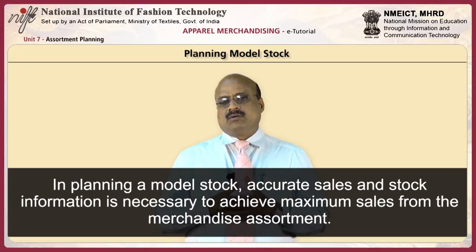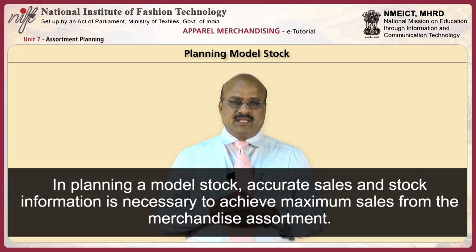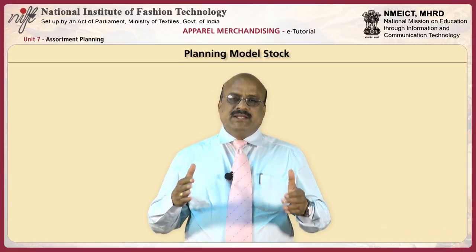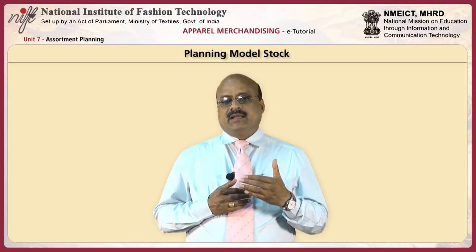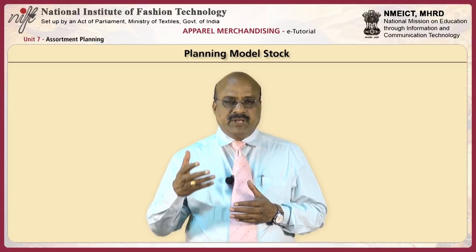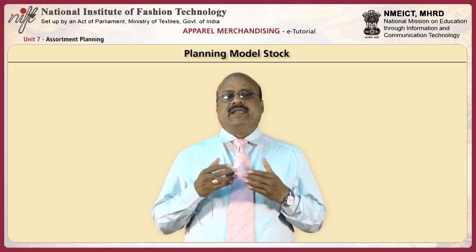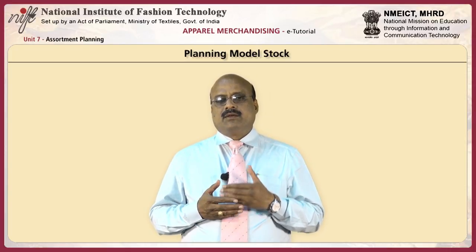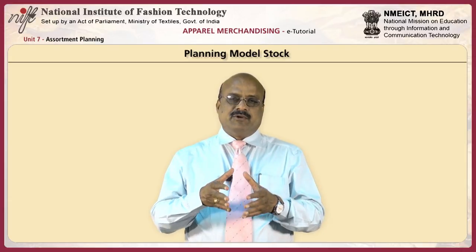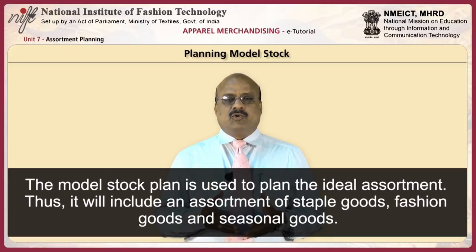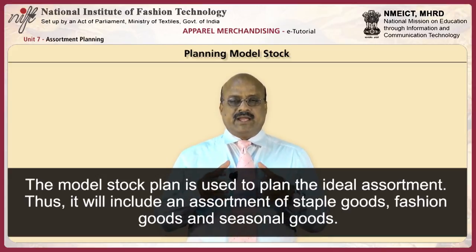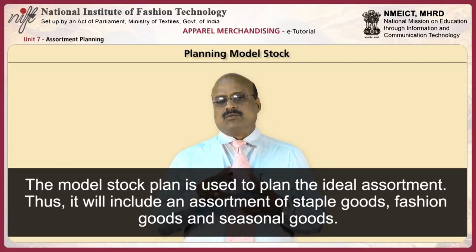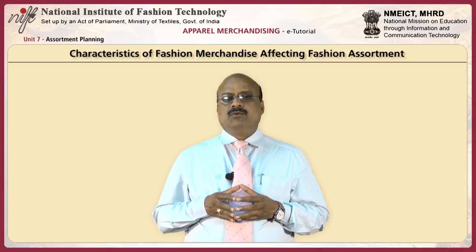In planning a model stock, accurate sales and stock information is necessary to achieve maximum sales from the merchandise assortment. The buyers of fashion apparel must be guided by current trends as well as by previous sales patterns. The buying specialist will develop a specific buying plan that gives consideration to what to buy, when to purchase, and when to have merchandise delivered. The model stock plan is used to plan the ideal assortment and will include an assortment of staple goods, fashion goods, and seasonal goods.